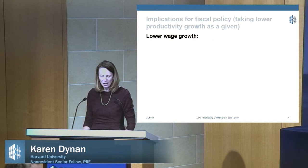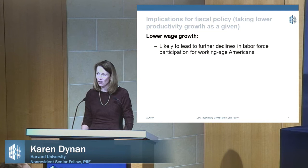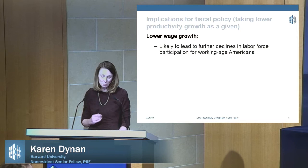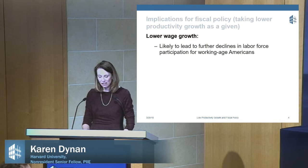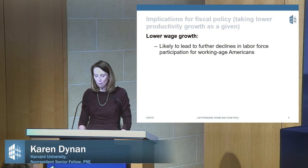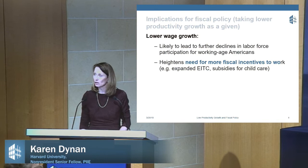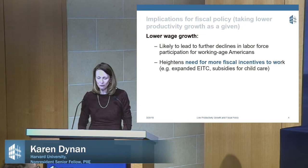Moving on to the implications of lower wage growth: research looking at why labor force participation has declined amongst working-age Americans has identified lower wage growth as a cause. With yet lower productivity growth, we can expect even lower wage growth, which raises the possibility of even lower labor force participation — bad for the people themselves, bad for social cohesion, and bad for our budget situation. This makes the case for more fiscal incentives to work, such as expanding the EITC or subsidies to child care to motivate more second earners to enter the market.